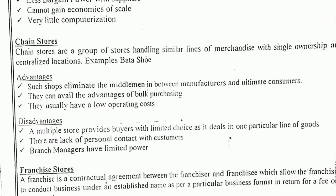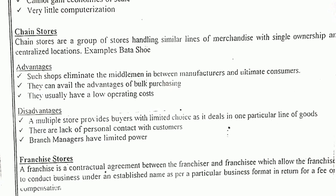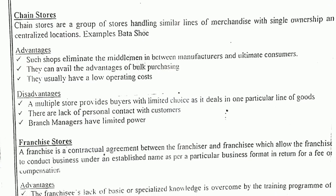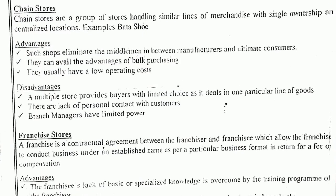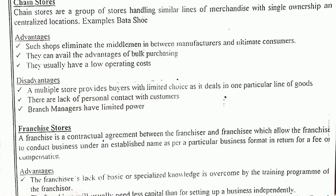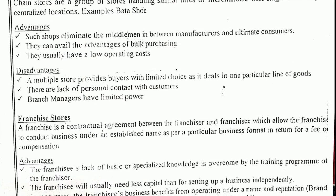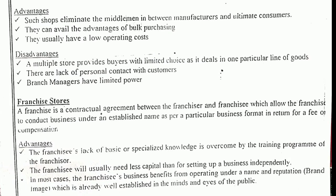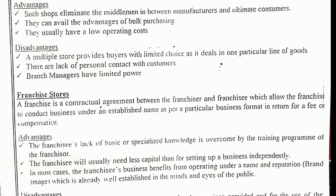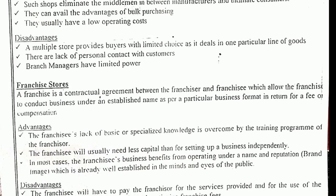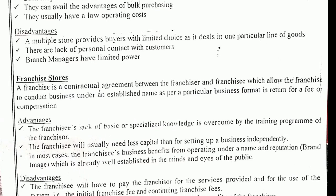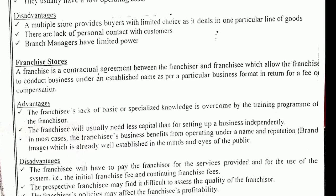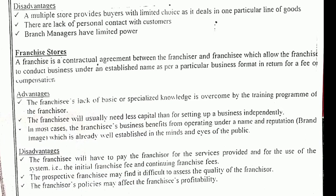Next we have chain stores: when a particular shop opens one more branch at another area, that is known as a chain store. Franchisee store: here there is a contract between the franchisor and franchisee, where the franchisor runs the business and a certain commission is paid to the franchisee. Then we have the lease department — in malls, for example, a particular department is leased and some amount is paid by the seller to the department.